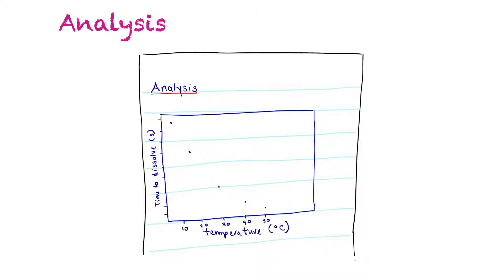The next thing to record is your analysis of results. This is where you would do a calculation or make a graph with your data. I decided to make a scatter plot of temperature versus how long it took for each tablet to dissolve. From the graph, we can see that as temperature increases, the time it takes for the tablet to dissolve decreases — it definitely speeds up the rate of reaction.